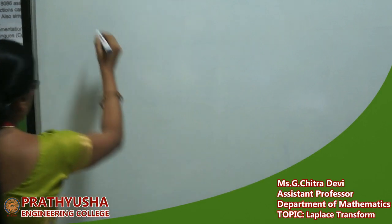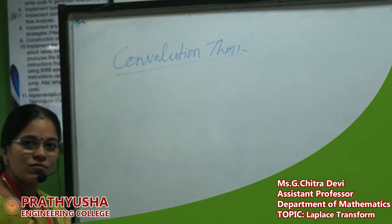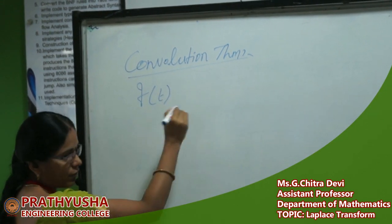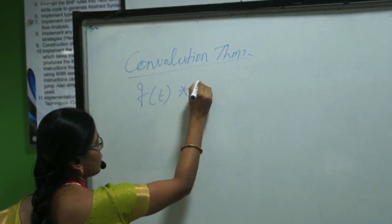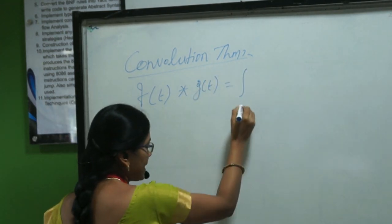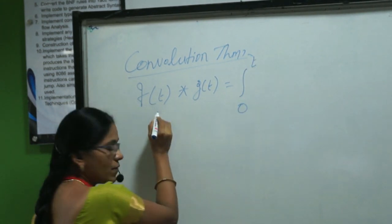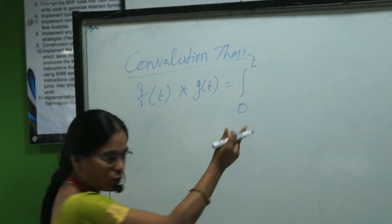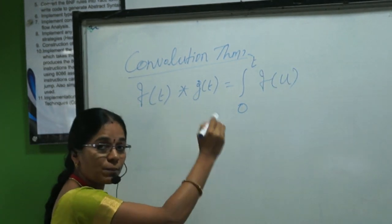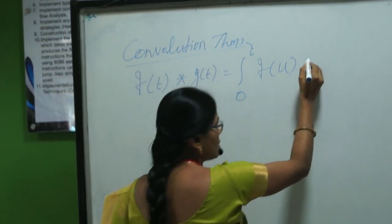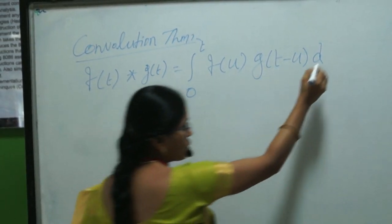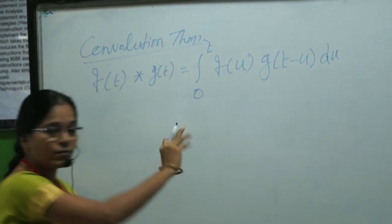What is the Convolution Theorem? First, I have to write the formula. Here you take two functions f(t) and g(t). The convolution of f(t) and g(t) is defined as the integral from 0 to t of f(u) times g(t minus u) du. This is the convolution formula.